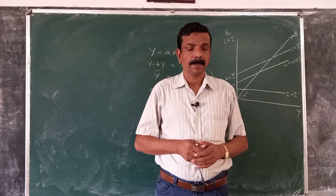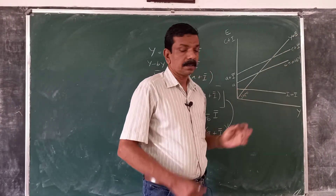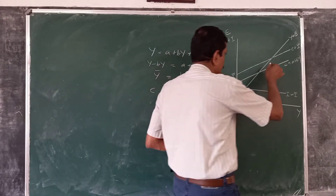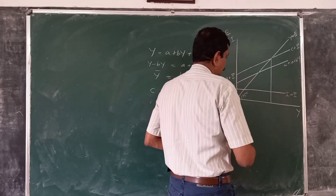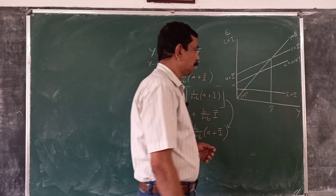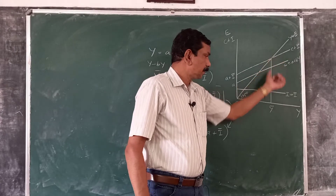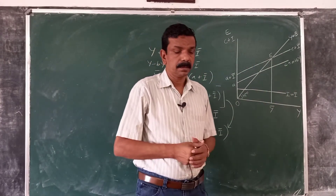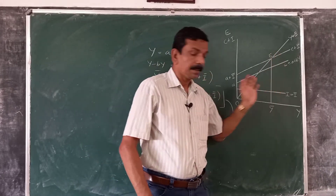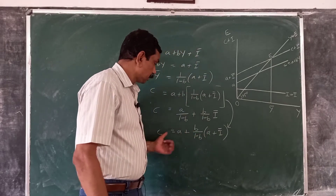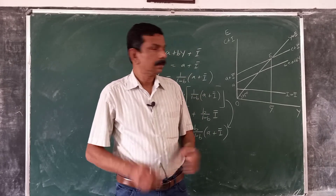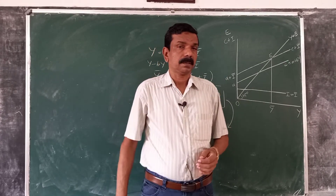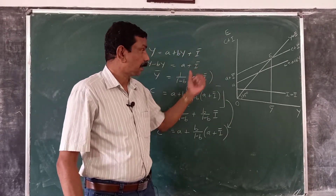The slope of the aggregate demand schedule is the marginal propensity to consume MPC, which is delta C over delta Y. Equilibrium occurs when aggregate supply equals aggregate demand — that is, where the C plus I schedule intersects the 45-degree line at Y bar. This is given by point E, where Y equals Y bar and the corresponding consumption is C equals C bar. This is how equilibrium level of income and output is determined in the two-sector economy.